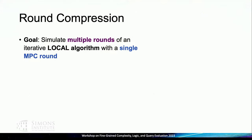I'll now show you a technique that gets you O(log log n) rounds. This technique uses distributed graph algorithms in the local distributed graph algorithm model — which I'll define — and is called round compression. The goal of this technique is to simulate multiple rounds of an iterative local distributed algorithm using a single MPC round, essentially showing that this model has more power than some distributed models for certain problems.